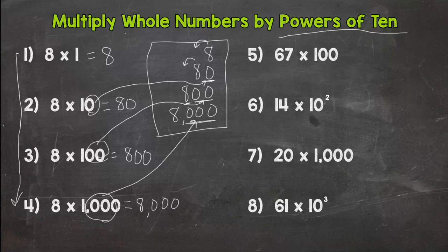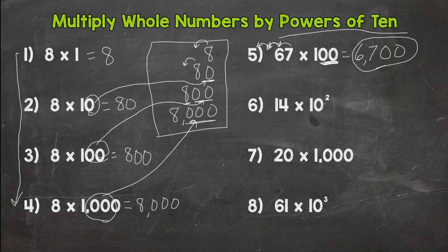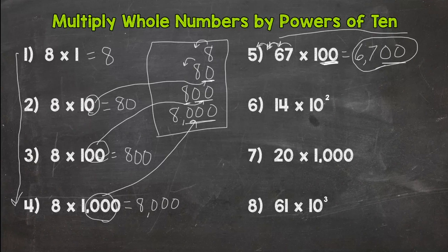Number 5 is 67 times 100. We are pushing 67 two spots to the left — the 6 goes two spots left and the 7 goes two spots left. We put two zeros on the end of 67 to do that, since 100 has two zeros. We get 6700. An easy way of thinking about it is adding two zeros to the end of 67, but make sure you understand we're doing it to push everything to the correct place value.